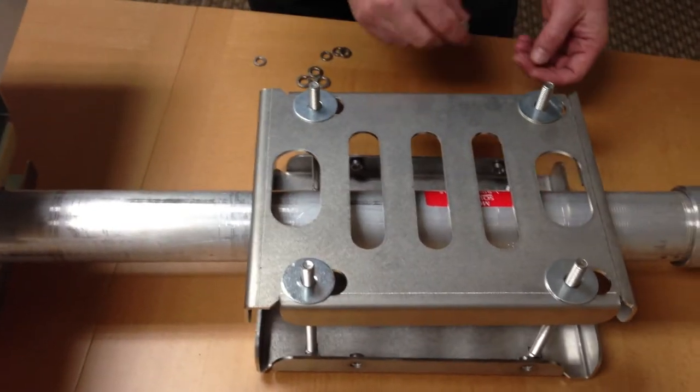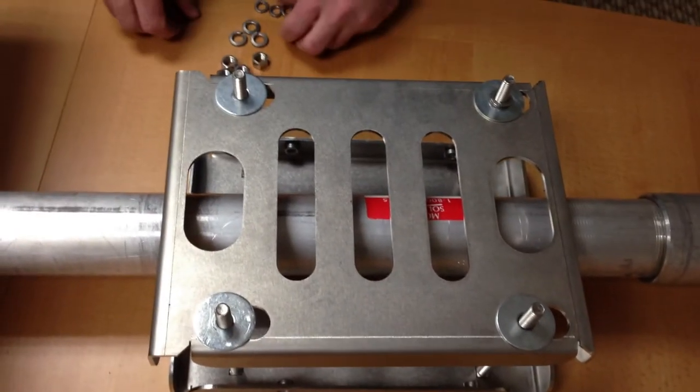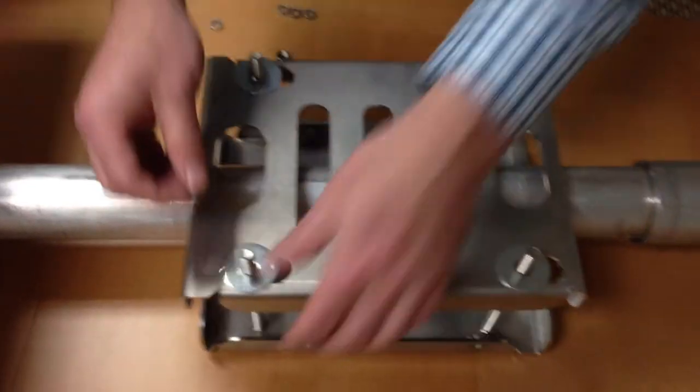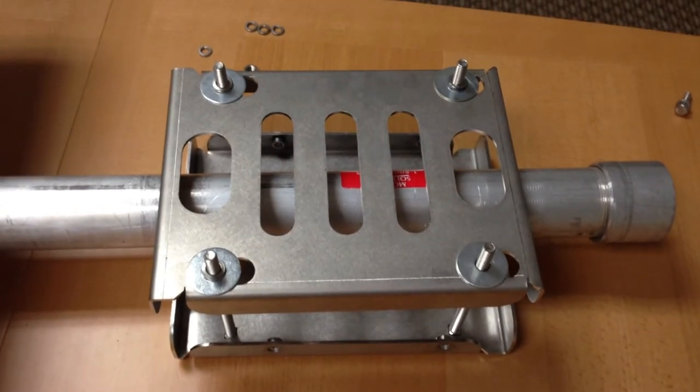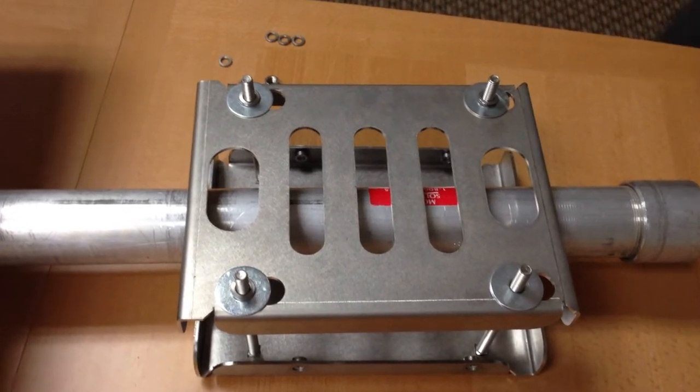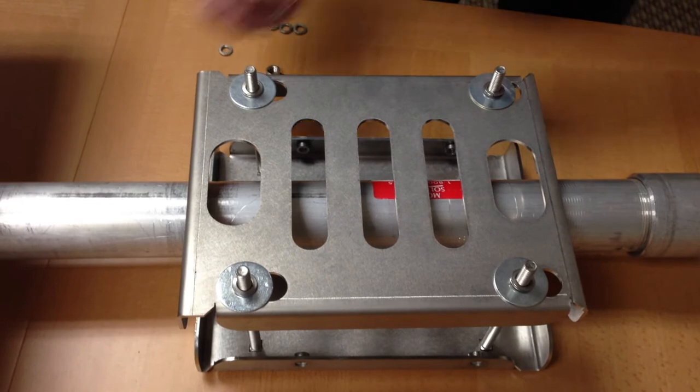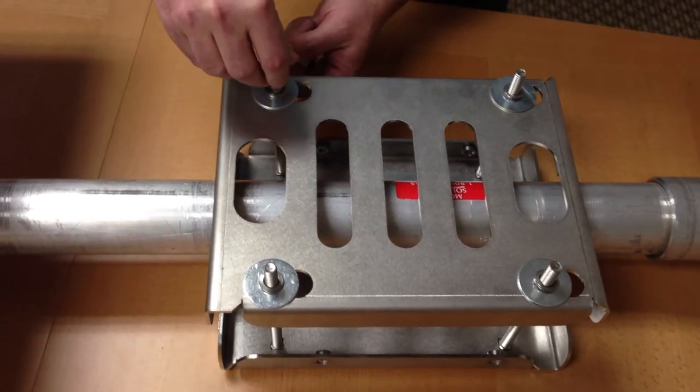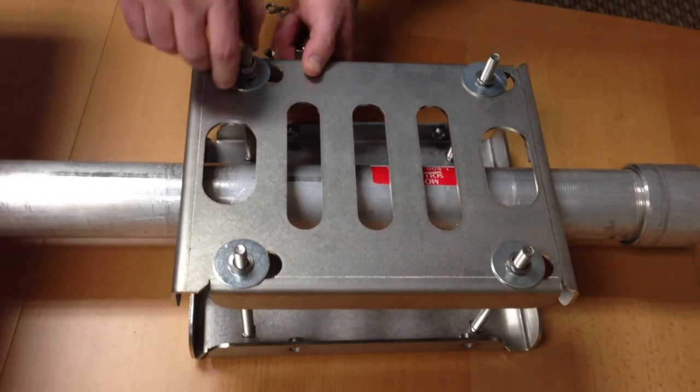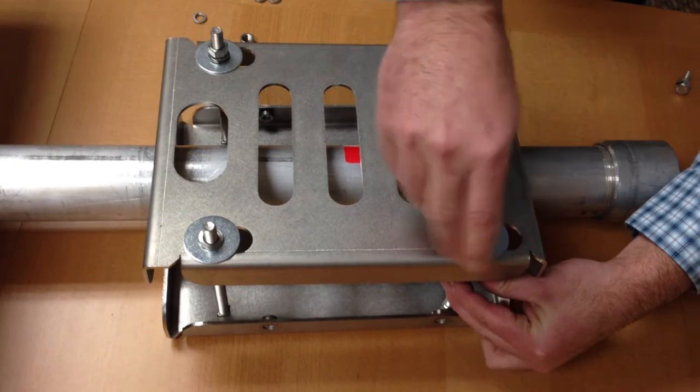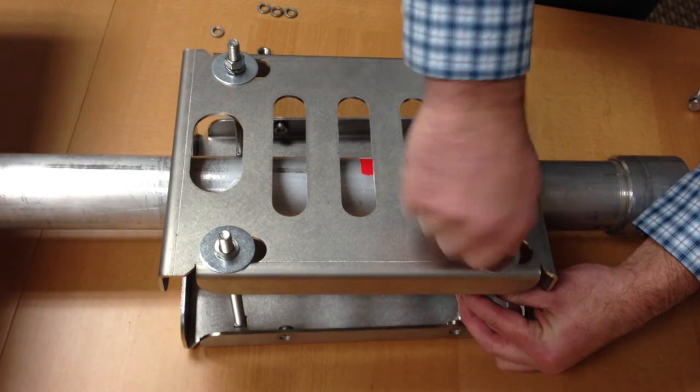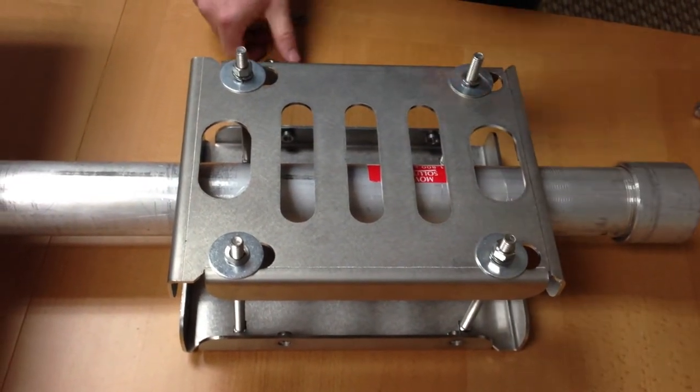After that, I'll go ahead and put the lock washers on. Whoops! Lost one. And then my nuts. And as I thread these nuts on the carriage bolts, I just want to make sure that I'm keeping everything level and equal as far as how it's secured to the pipe.